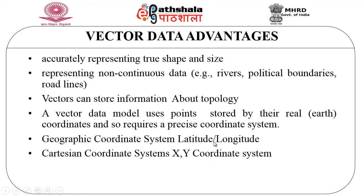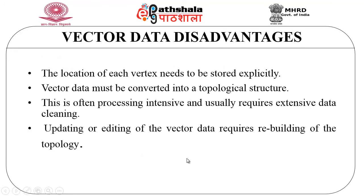Some advantages of vector data: they accurately represent the shape and size of the dataset, and also represent non-continuous data, for example rivers, political boundaries, and road lines. Vectors can also store information about the topology. A vector data model uses points stored by real coordinates and requires a precise coordinate system. The geographic coordinate system represents latitude and longitude; in the Cartesian coordinate system, it is referred to as x and y coordinates. Some disadvantages: the location of each vertex needs to be stored explicitly; the data has to be converted into a topological structure; processing is highly intensive and usually requires extensive data cleaning. Updating or editing vector data requires rebuilding the topology.